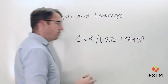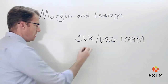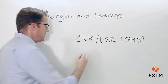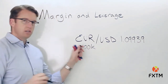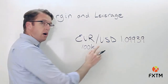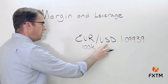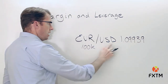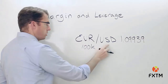Now we know that a single lot position means that because the euro is the base currency, this represents 100,000 units of the euro. So what we need to know, however, if your account is denominated in US dollars, is what's the notional value of this one lot position if the account currency is the quote currency, which is the dollar?